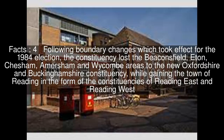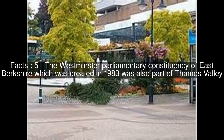Following boundary changes which took effect for the 1984 election, the constituency lost the Beaconsfield, Eaton, Chesham, Amersham and Wickham areas to the new Oxfordshire and Buckinghamshire constituency, while gaining the town of Reading in the form of the constituencies of Reading East and Reading West. The Westminster Parliamentary constituency of East Berkshire, which was created in 1983, was also part of Thames Valley.